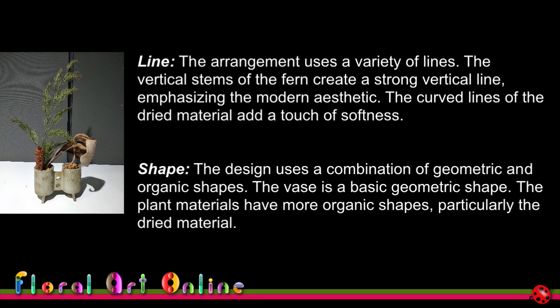Here is the Basic Modern design. First of all, looking at line: the arrangement uses a variety of lines. The vertical stems of the fern create a strong vertical line, emphasizing the modern aesthetic. The curved lines of the dried material add a touch of softness. In terms of shape, the design uses a combination of geometric and organic shapes. The vase is a basic geometric shape — essentially a couple of circles joined by a rectangle — while the plant materials have more organic shapes, particularly the dried material.